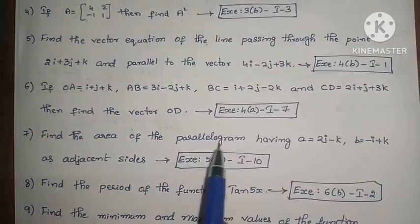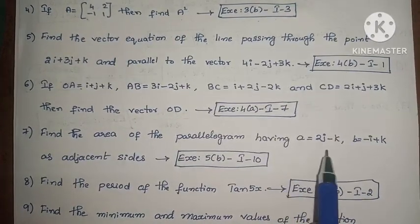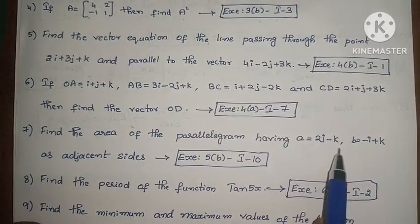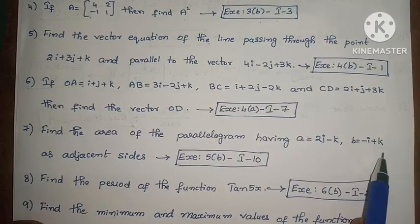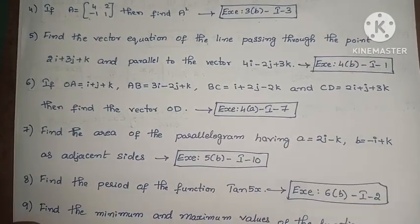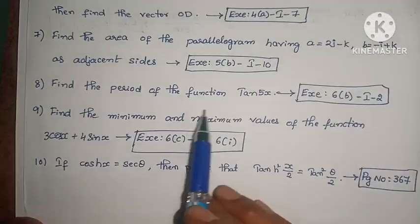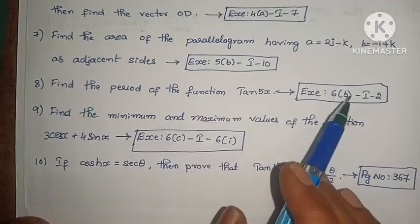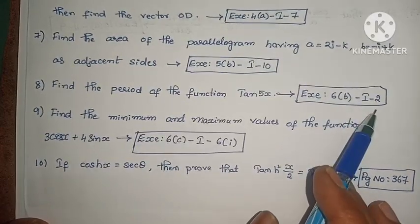Next, find the area of the parallelogram having A equals 2j minus k, B equals minus i plus k as adjacent sides. Exercise 5, First Roman, Tenth one. Next, find the period of the function tan 5x. Exercise 6, First Roman, Second one.